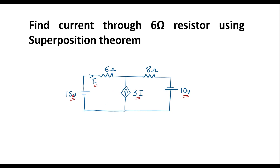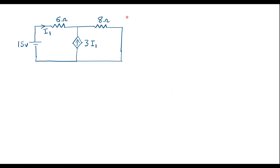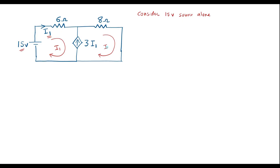Now let me consider the 15 volt source alone. If we consider 15 volt source alone, then we need to short circuit the 10 volt source. I will assume current through the 6 ohm resistor is I1 when 15 volt source is considered. The 10 volt source is shorted. I will assume current through the other loop is I2.